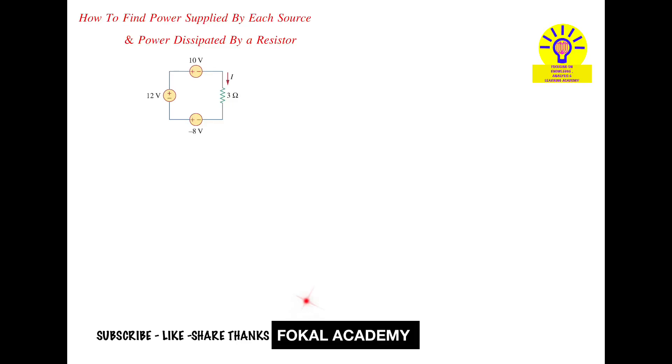Hi everyone, welcome to FOKAL Academy. In this circuit, three voltage sources are connected to a resistor with one loop, and we're asked to find the power supplied by each source and the power dissipated by the resistor. This is the problem.